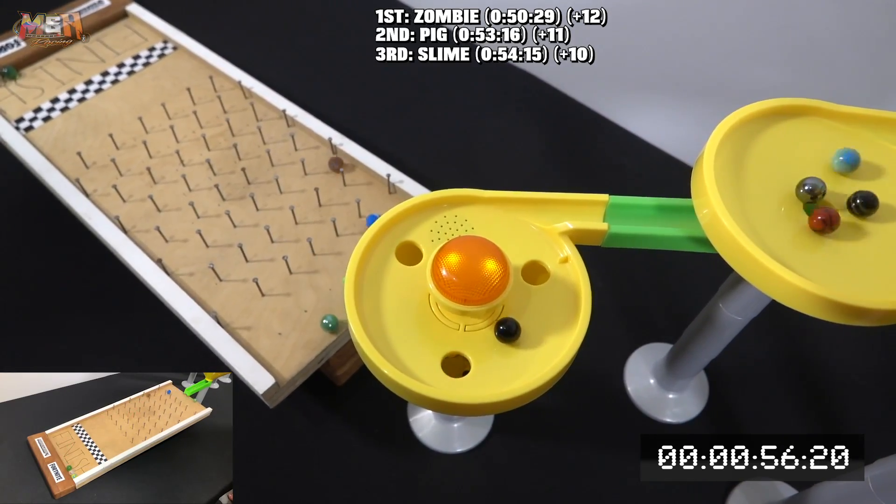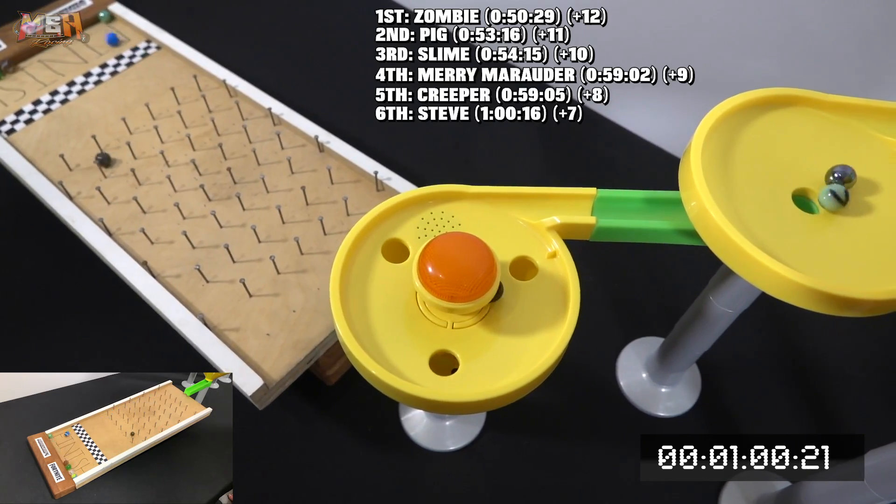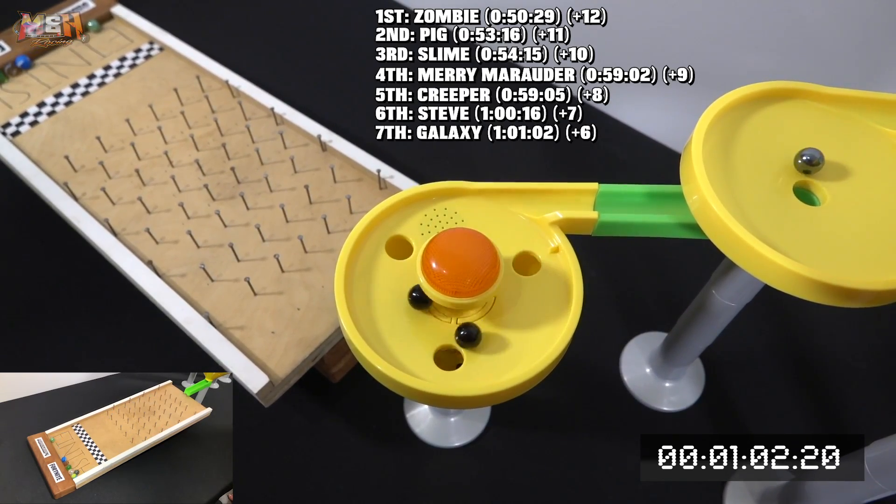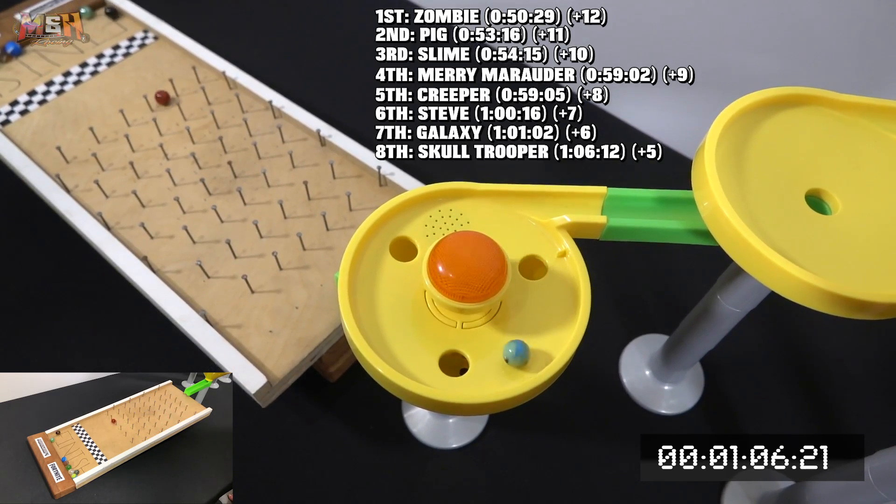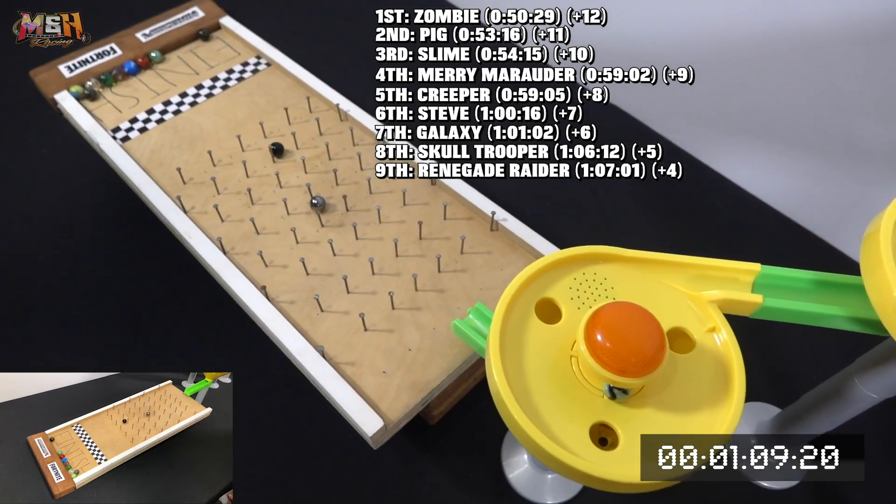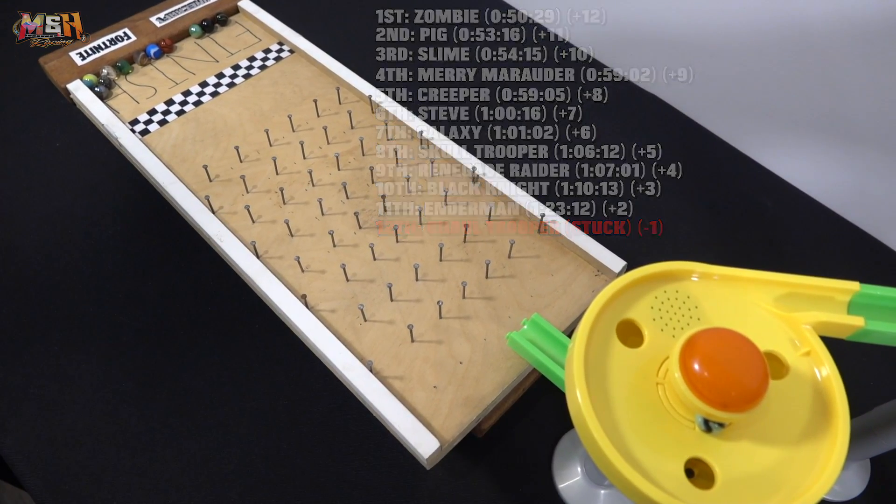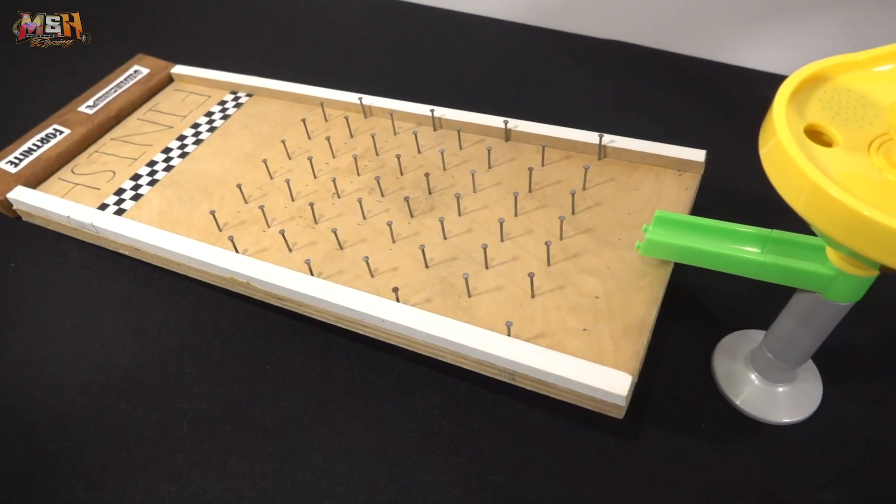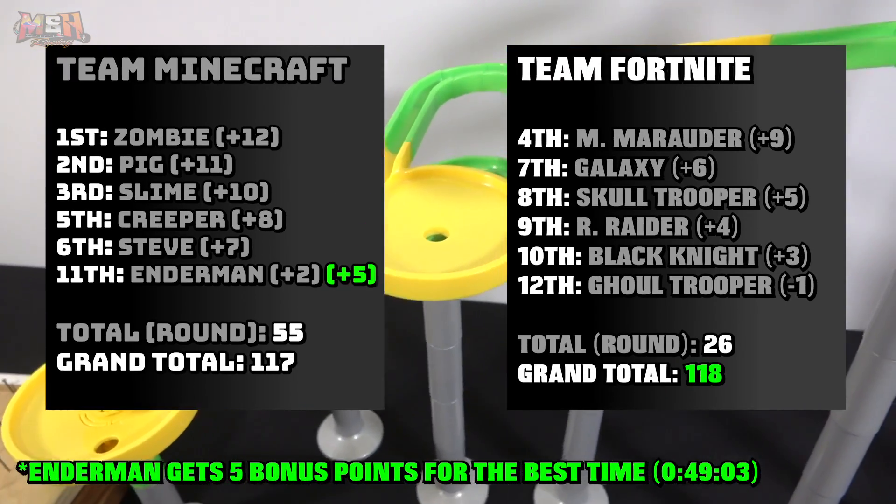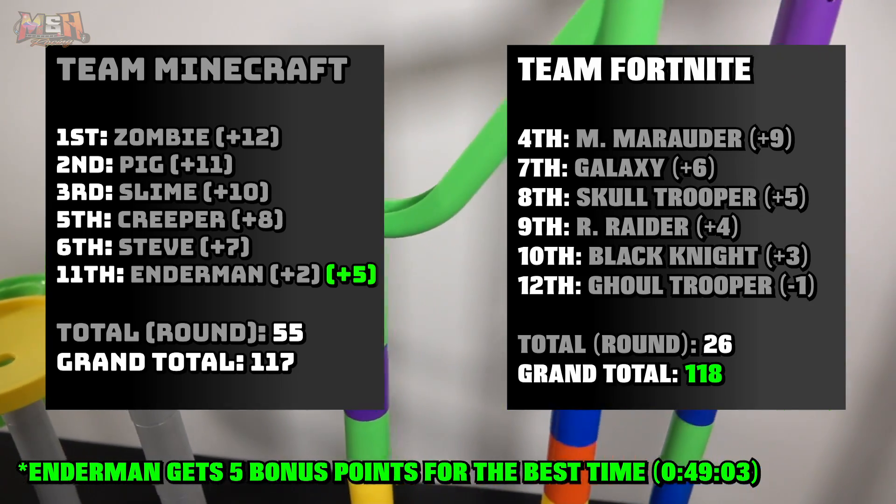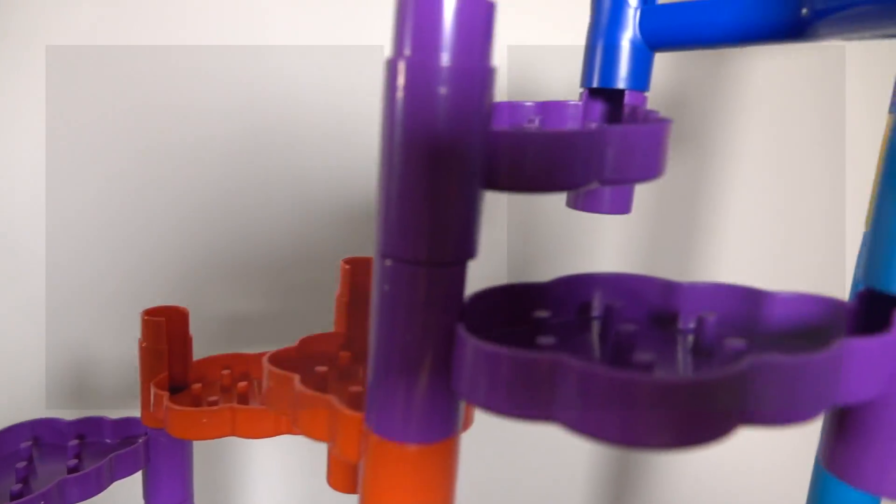And Merry Marauder is going to be getting fourth, followed closely by Creeper, then Steve, Galaxy seventh. This is the race Minecraft needed. Skull Trooper, Renegade Raider eighth and ninth, Black Knight and Enderman placing eleventh and twelfth. But will this race be enough to beat Fortnite? The results are in, and Minecraft is so close yet so far, just losing by one point. Enderman gives the team an extra five points, but it looks like this win will be going to team Fortnite.